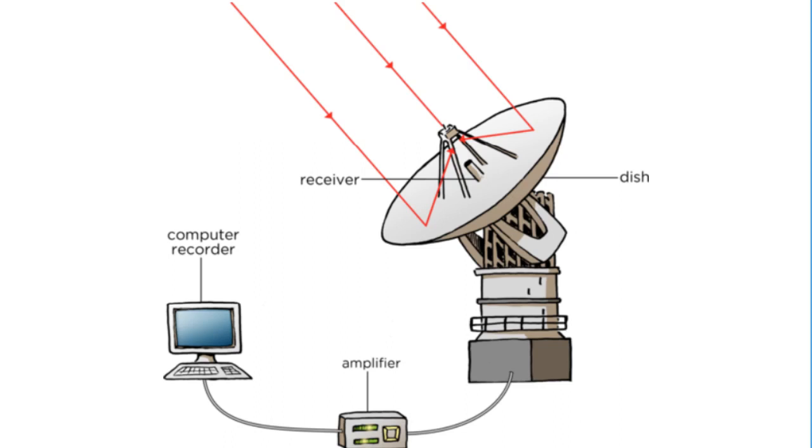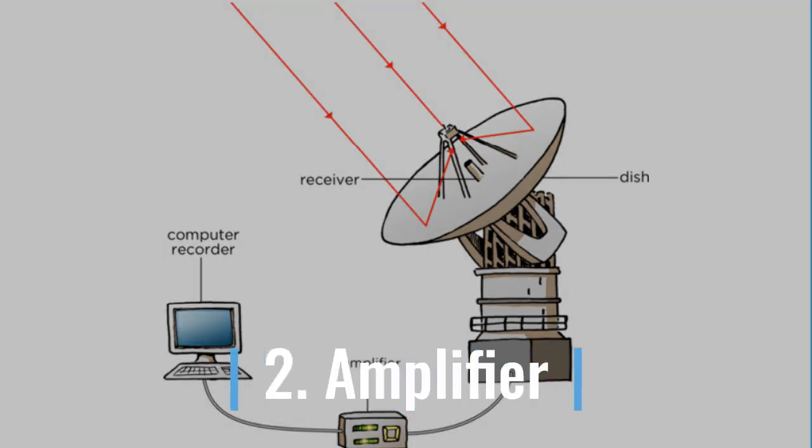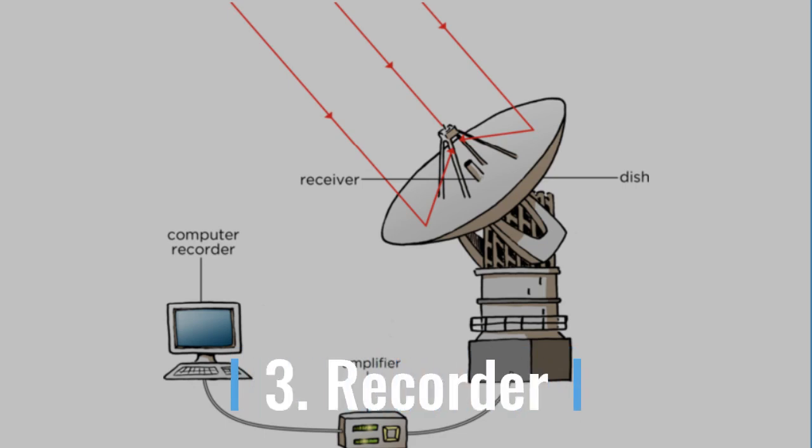The second component of a radio telescope is a receiver and amplifier, used to boost the very weak radio signal to a measurable level. These days, amplifiers are extremely sensitive and are normally cooled to very low temperatures to minimize interference due to noise generated by the movement of atoms in the metal, which is also called thermal noise.